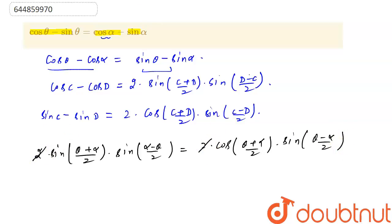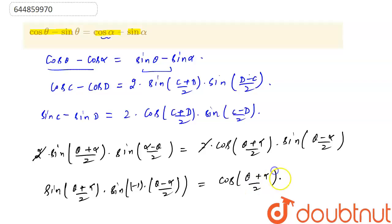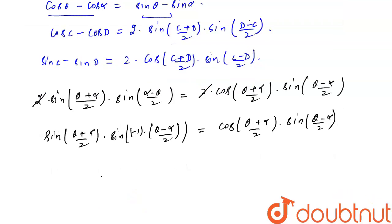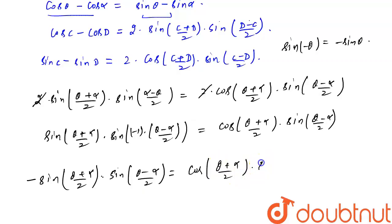The 2 and 2 will cancel out. We get sin((θ+α)/2) · sin((α-θ)/2) = cos((θ+α)/2) · sin((θ-α)/2). And we know that sin(-θ) = -sin θ, so sin((α-θ)/2) becomes -sin((θ+α)/2) · sin((θ-α)/2) = cos((θ+α)/2) · sin((θ-α)/2).